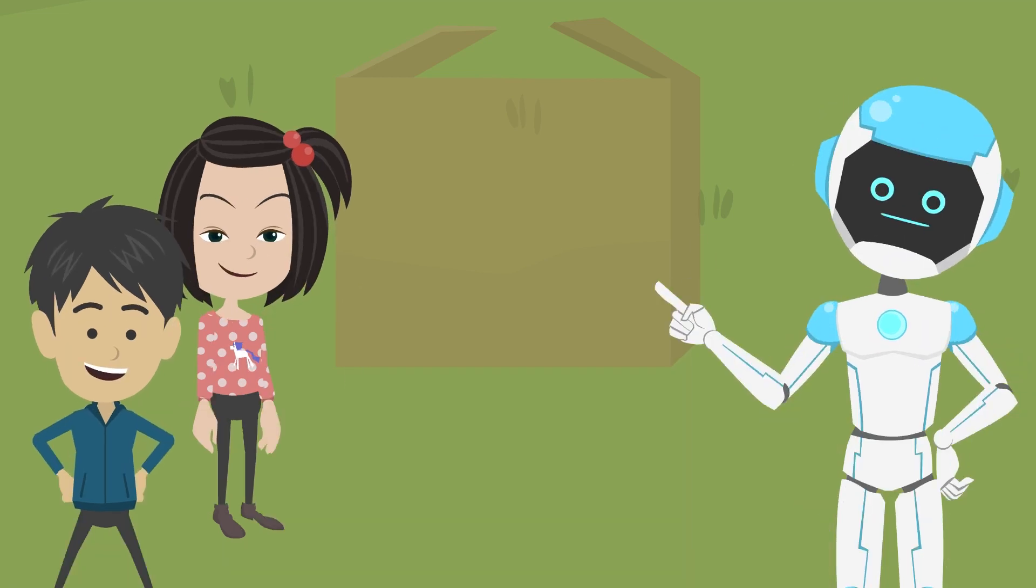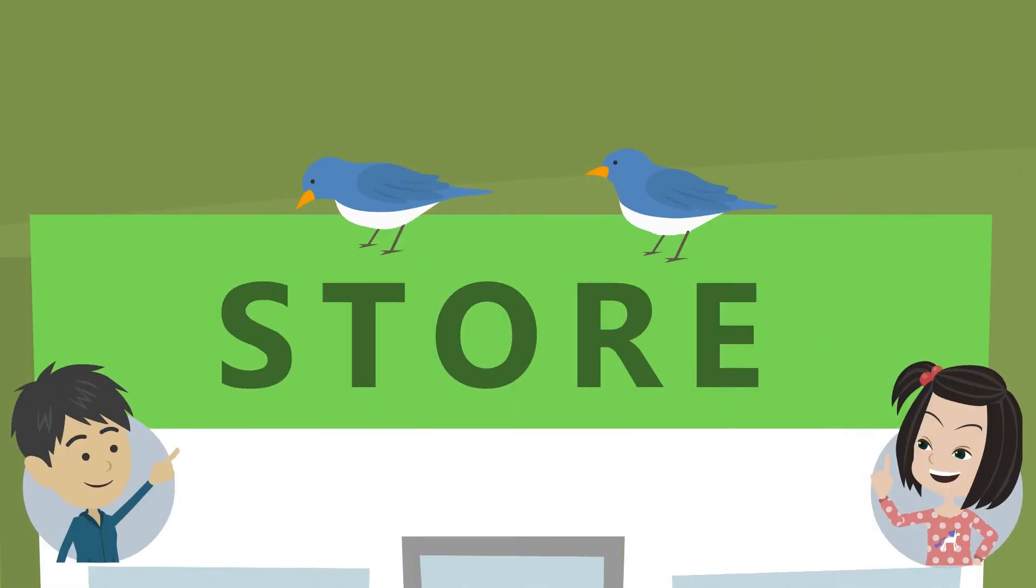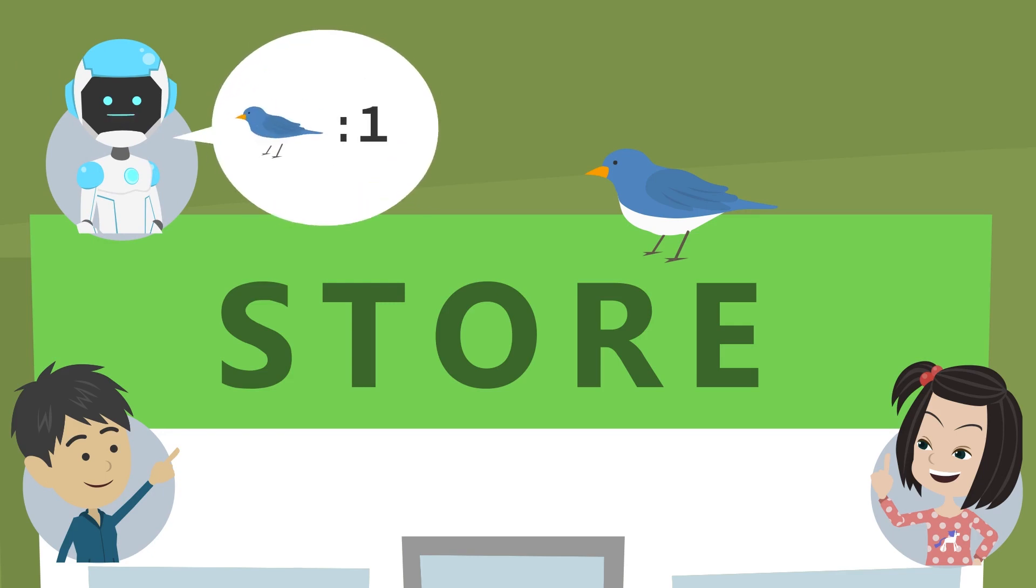Look over there. There are two birds on the roof. One bird has flown away. The number of birds left is 1. The other bird flies away. The number of birds left is 0. This means there are no more birds on the roof. I understand it very well.